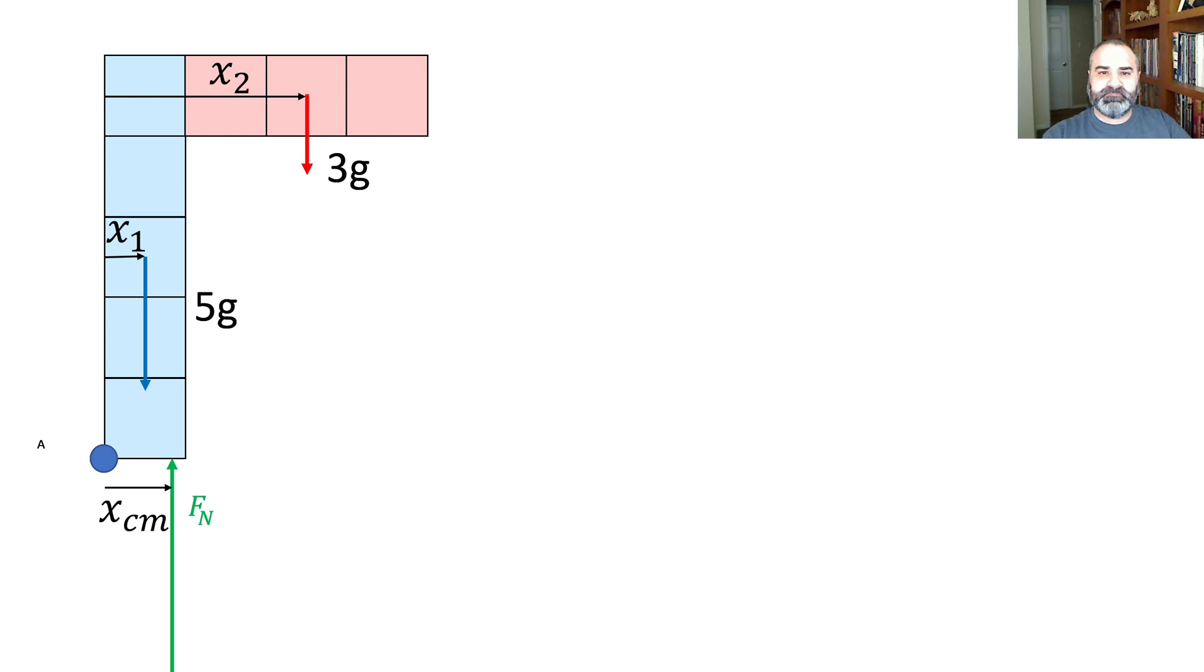Now, each of these forces is a different horizontal distance over from point A. The 5g is a distance x1, the 3g is a distance x2, and the normal force is the disposition of the center of mass away. So we would need to put that normal force under the center of mass in order to support this object.